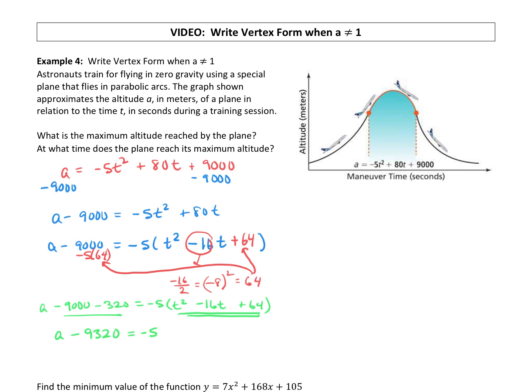This negative 5 is going to stay out front, but we can factor this trinomial. We made it, we created it so that we could find factors of 64 that add up to negative 16. That's going to be a negative 8 and negative 8. So we're going to say x minus 8 squared. And then we want to go back and solve for a, so we're going to add 9,320 to both sides.